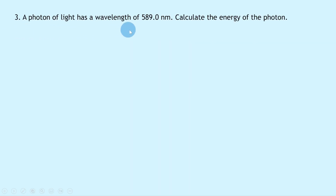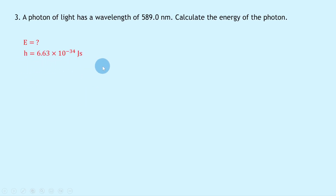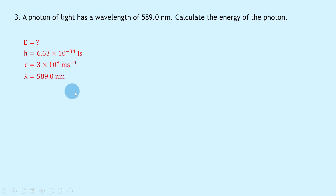Question 3 says a photon of light has a wavelength of 589.0 nanometres — calculate the energy of the photon. There are two ways to do this: use the two separate equations v = fλ and E = hf, or use the combined equation E = hc/λ. I'm going to use the combined equation. Writing down what we know: h = 6.63 × 10⁻³⁴ J·s, c = 3 × 10⁸ m/s (both from the datasheet), and λ = 589.0 nm = 589 × 10⁻⁹ m.